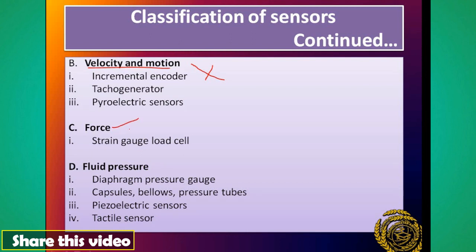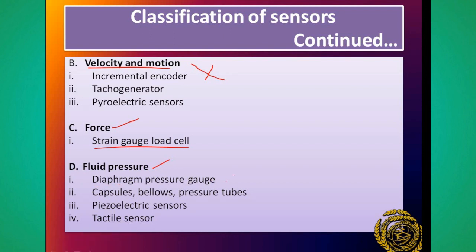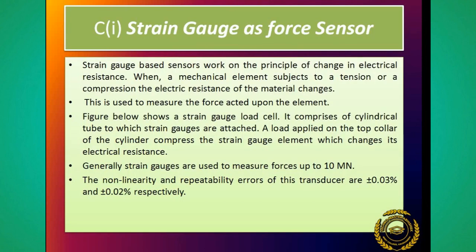The strain gauge load cell - that is its full name - will be used as a force sensor. After that, for measuring fluid pressure, sensors such as the diaphragm pressure gauge, capsule type, bellows, or pressure tubes are used. These types of sensors can be used for fluid pressures. Now let's see how the force type works and how strain gauges are used to measure force.